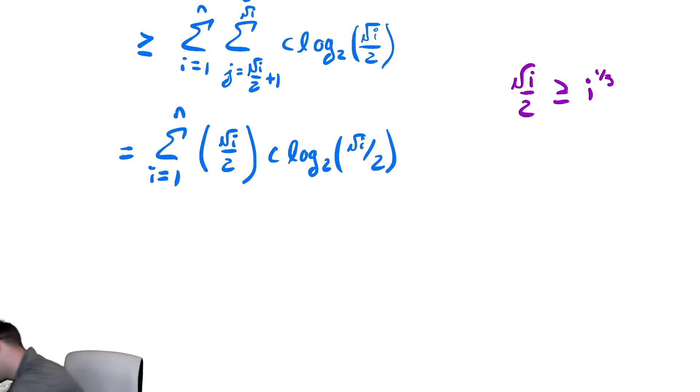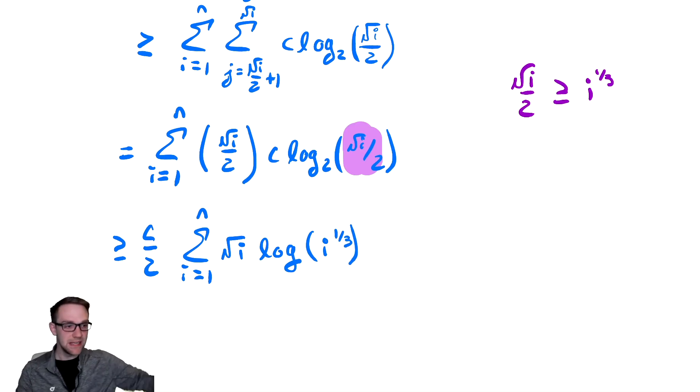So this is greater than or equal to. I'm also going to factor out the c over two. We have c over two times the sum from i equals one to n of radical i doing nothing there, and then log of i to the one third. And then just as we did with our radical i in the upper bound, we are going to pull the one third out front. So let's do that right now, and then we'll start bounding below again.